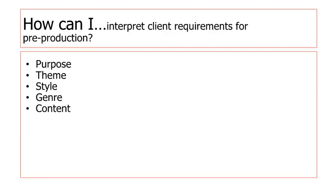If you are given client requirements for pre-production, we need to be thinking about five different areas: Purpose, Theme, Style, Genre, and Content.